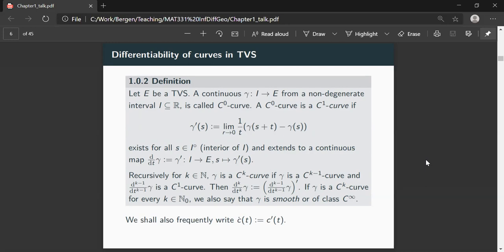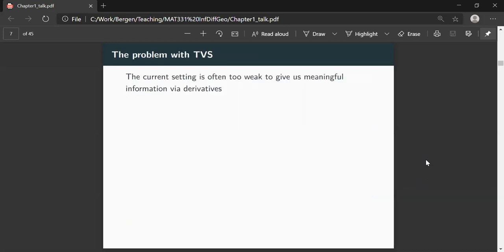However, there's immediately one problem we'll discuss in an exercise. The problem with topological vector spaces is that the setting is often too weak to give us meaningful information using the derivative. Recall when one defines derivatives, then what one proves is if the derivative of a curve vanishes everywhere, then the curve is constant. So this nice little theorem, you know, from finite dimensional calculus. However, it becomes false in topological vector spaces. Let me give you an example where you will work out the details later.